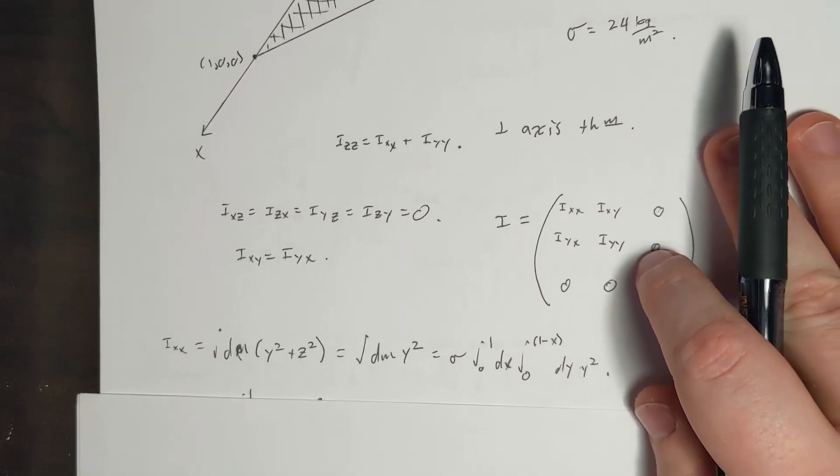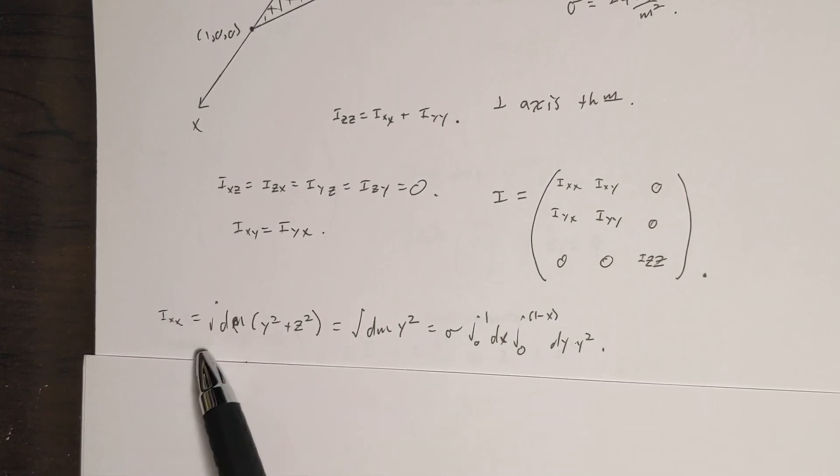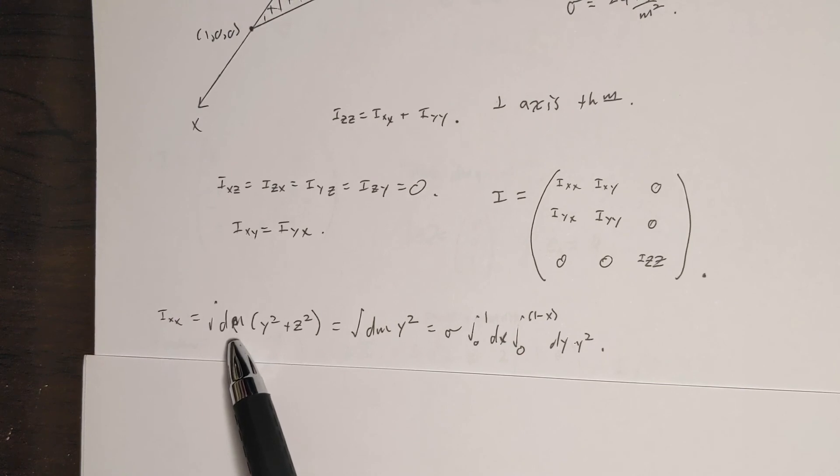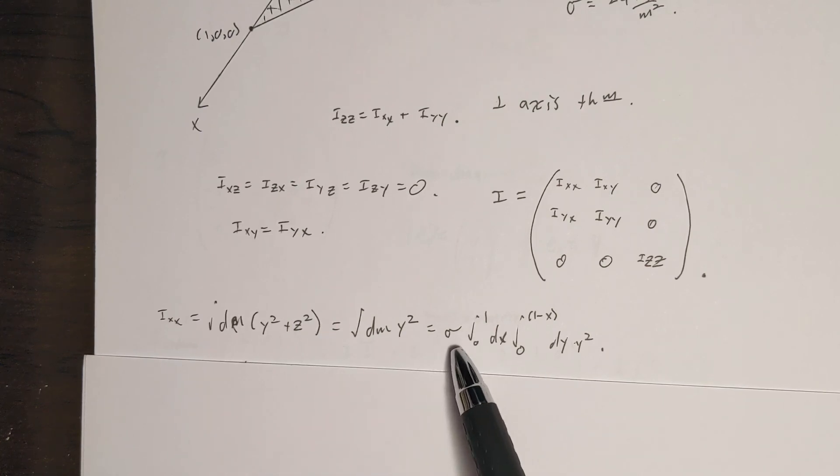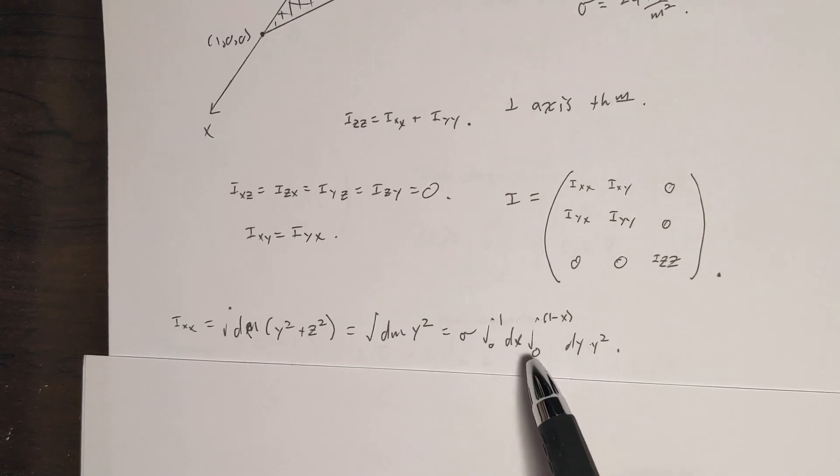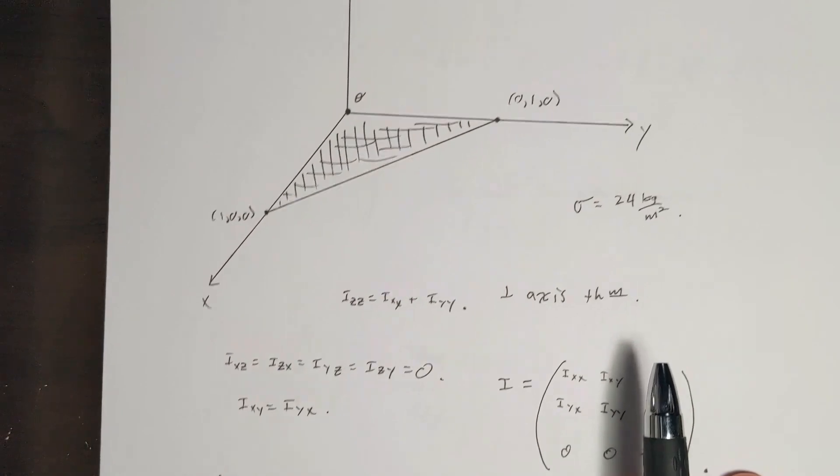So this is the standard form for I_xx. We have a little bit of mass dm, which is y squared plus z squared, but we've already said that z was zero. So this goes away. And then, without going into specifics of how the integral was set up, this is just a simple thing you could very much easily find in a calculus textbook.